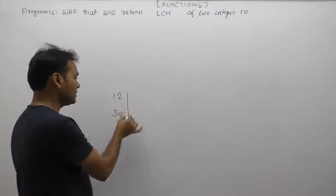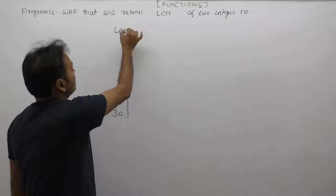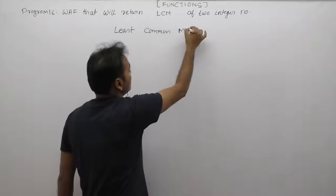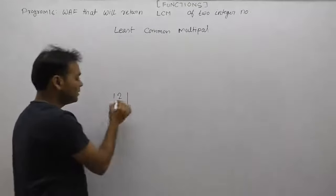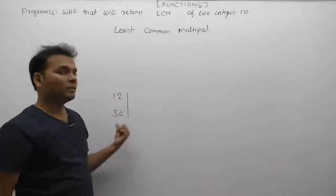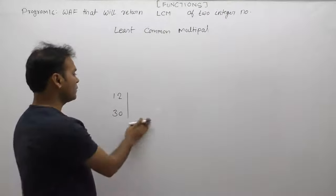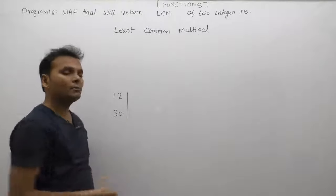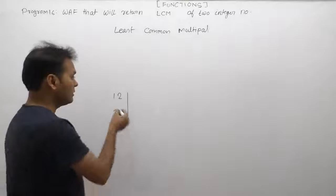What is LCM? LCM stands for Least Common Multiple. We need multiples of 12 and multiples of 30, not factors. Multiples always means a number divisible by 12 as well as divisible by 30.